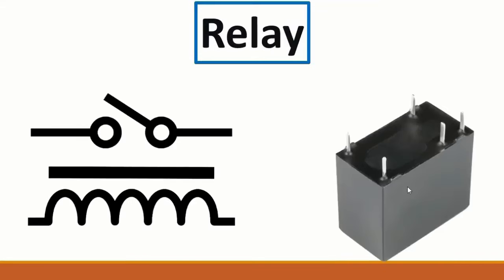Then we have the relay. The relay always contains an inductor and a switch. When the inductor is energized - when current passes through it - it pulls up the switch, the switch closes, and voltage passes from one side to the other.